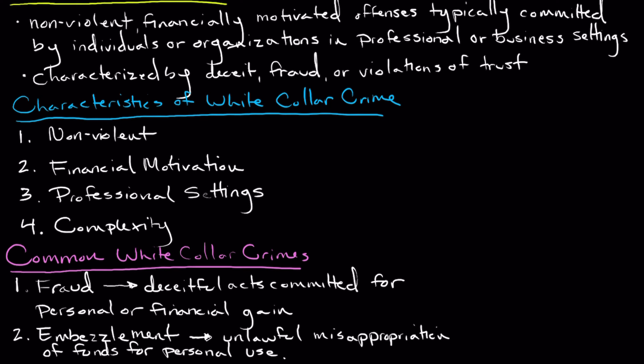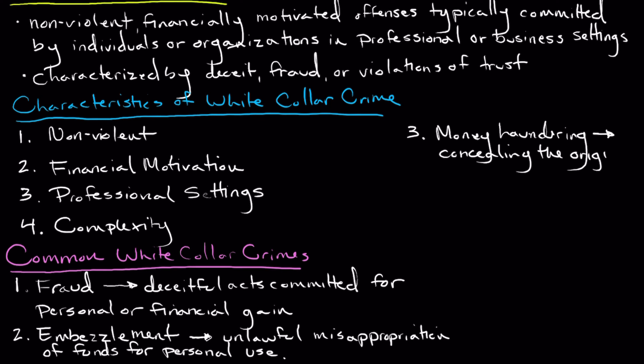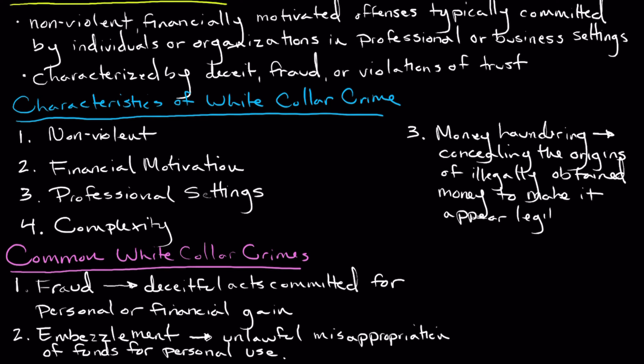The next common type of white-collar crime is money laundering. Money laundering involves the process of concealing the origins of illegally obtained money to make them appear legitimate. Individuals or organizations engage in a series of transactions or activities with the intent of disguising the illicit source of funds, making it more difficult for law enforcement to trace the money.